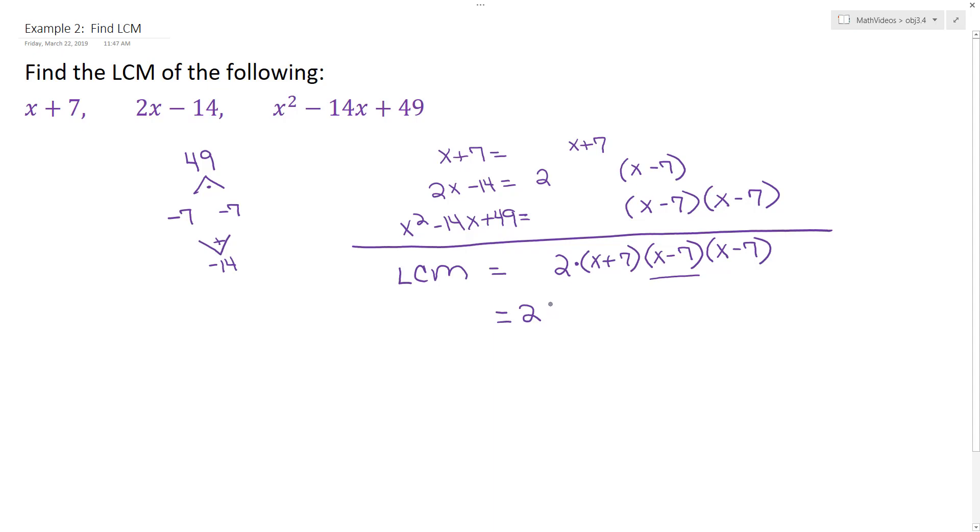And then any repeating factors, you want to write those with exponential notation. So multiply by the x plus 7 to the first power, and you don't need to put the 1. And then x minus 7 occurs twice, so it's to the second power. And then you're done. That's the least common multiple for x plus 7, 2x minus 14, and x squared minus 14x plus 49.